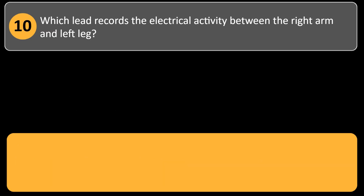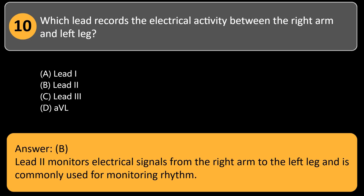Which lead records the electrical activity between the right arm and left leg? A. Lead I. B. Lead II. C. Lead III. D. AVL. Answer: B. Lead II monitors electrical signals from the right arm to the left leg and is commonly used for monitoring rhythm.